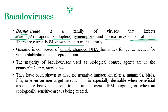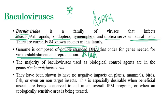The baculovirus genome is made up of double-stranded DNA — remember, double-stranded DNA — whereas the mycovirus genome is made up of double-stranded RNA (70%) and positive single-stranded RNA (30%). The double-stranded DNA of baculoviruses codes for genes needed for virus establishment and reproduction.